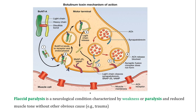The muscles are not able to contract in the absence of acetylcholine. This botulinum neurotoxin blocks the release of the neurotransmitter, and the condition it causes is known as flaccid paralysis. Flaccid paralysis is a neurological condition characterized by weakness or paralysis and reduced muscle tone without other obvious causes such as trauma.